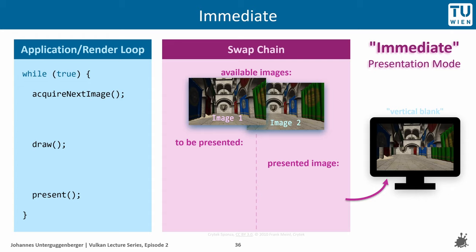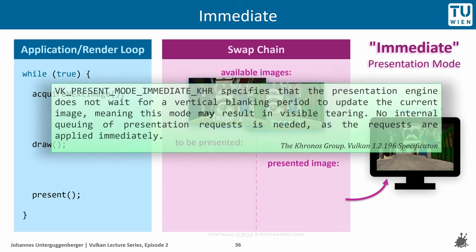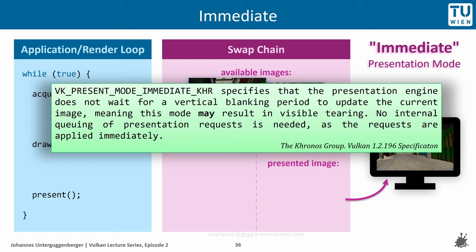The specification states: VK_PRESENT_MODE_IMMEDIATE_KHR specifies that the presentation engine does not wait for a vertical blanking period to update the current image, meaning this mode may result in visible tearing. No internal queuing of presentation requests is needed, as the requests are applied immediately.